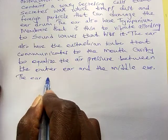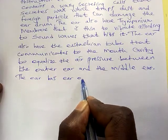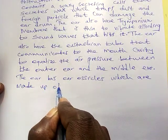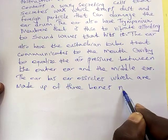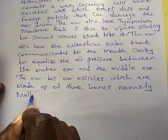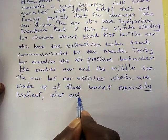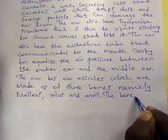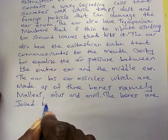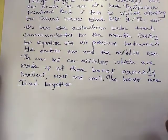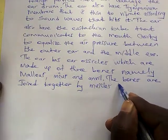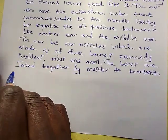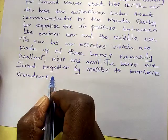The ear has ossicles, which are made up of three bones — namely the malleus, incus, and stapes. These bones are joined together by muscles to transmit vibrations across the middle ear.